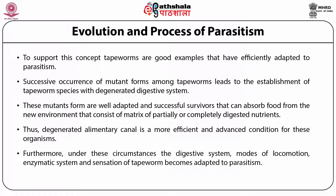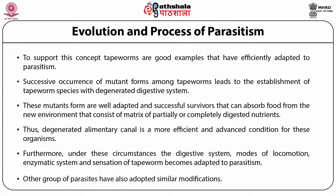These mutant forms are well adapted and successful survivors that can absorb food from the new environment consisting of a matrix of partially or completely digested nutrients. Thus, a degenerated alimentary canal is a more efficient and advanced condition for these organisms. Under these circumstances, the digestive system, modes of locomotion, enzymatic system and sensations of tapeworms became adapted to parasitism. Other groups of parasites have also adopted similar modifications.